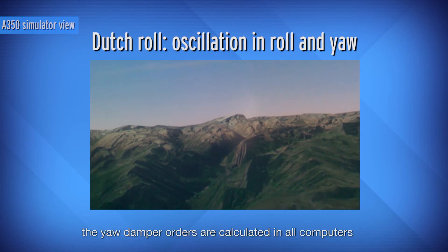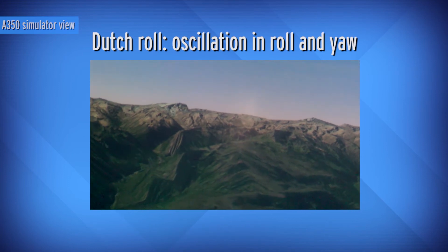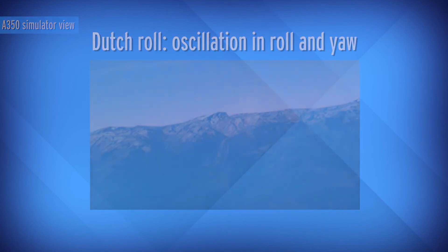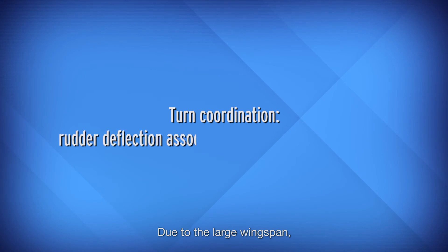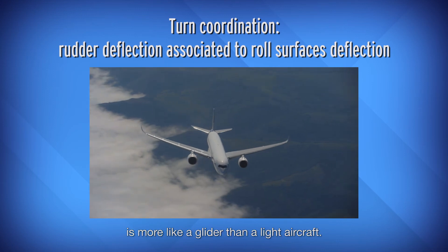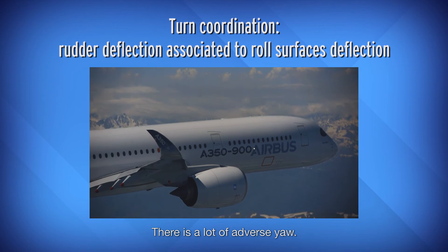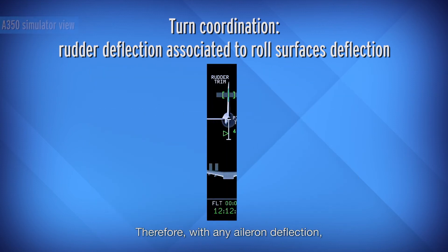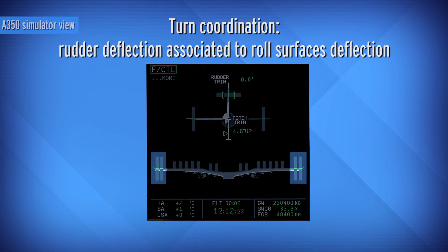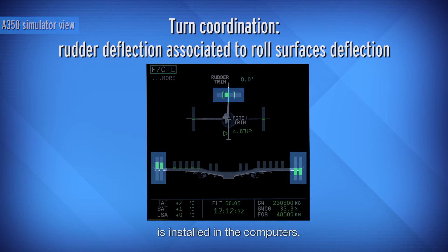On transport aircraft without a yaw damper, there is a Dutch roll oscillation in all configurations, sometimes with very poor natural damping and possibly no damping. On the most recent models, the yaw damper orders are calculated in all computers and are always available. Due to the large wingspan, the behaviour of a transport aircraft when starting a turn is more like a glider than a light aircraft — there is a lot of adverse yaw. Therefore, with any aileron deflection, there must also be a rudder deflection to maintain the sideslip at zero. This logic, called turn coordination, is installed in the computers.